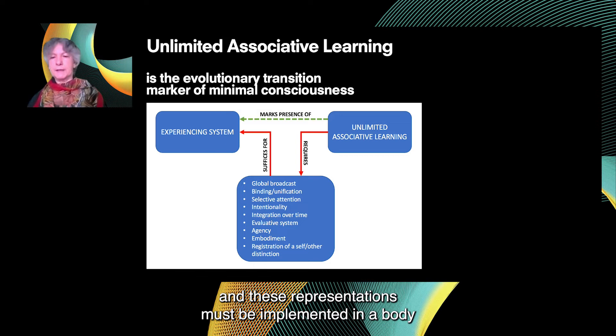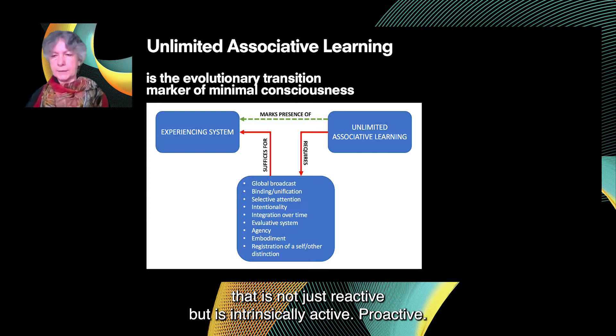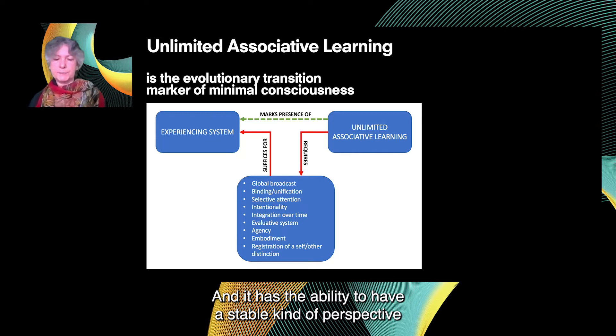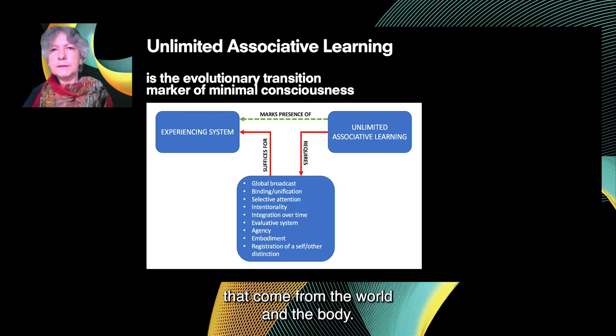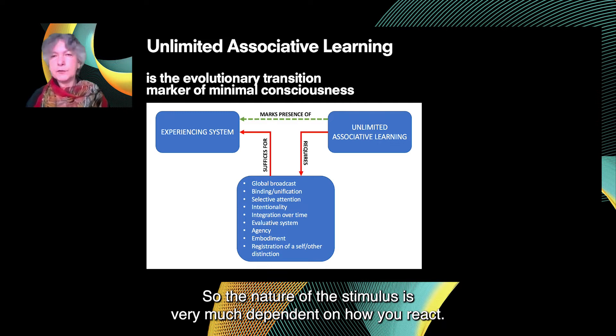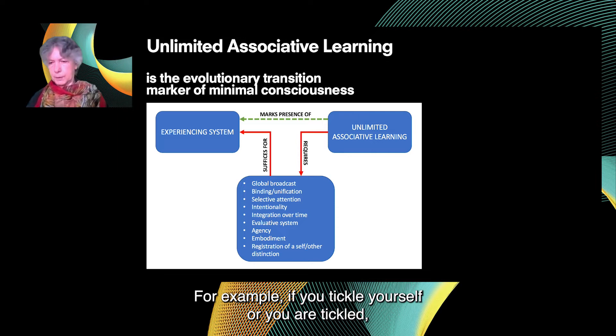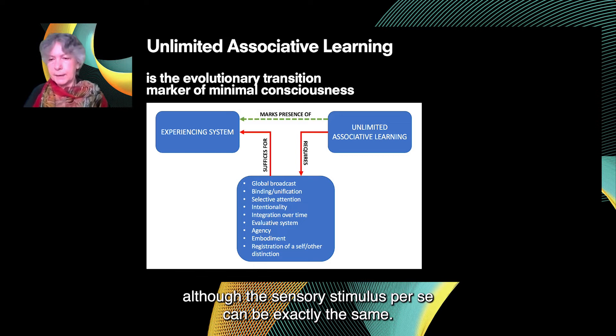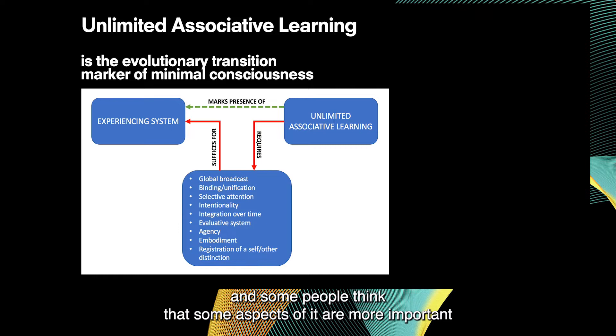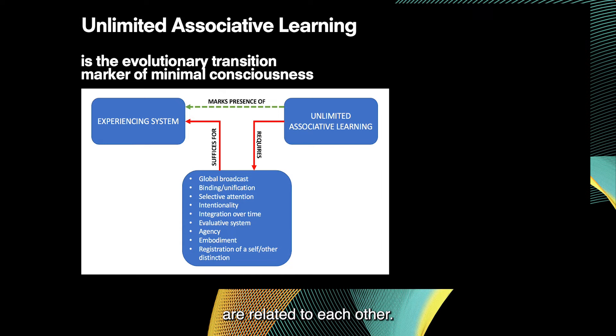These maps are also called representations, and they must be implemented in a body that is not just reactive but intrinsically active — proactive. It has the ability to maintain a stable perspective that can discriminate between the same stimuli coming from the world versus the body; the nature of a stimulus is very much dependent on where it comes from. For example, if you tickle yourself or you are tickled, your reaction is very different, although the sensory stimulus per se can be exactly the same. This list, as I said, is not complete, and some people think some aspects of it are more important than others.